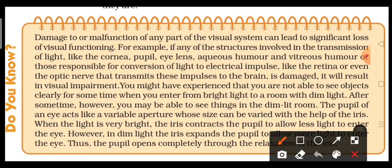To recap: sometimes you are not able to see objects clearly when you enter from bright light to a room with dim light, but after some time you are able to see things. The pupil of the eye acts as a variable aperture — its size can be small or big — so that light entrance can be controlled with the help of the iris.